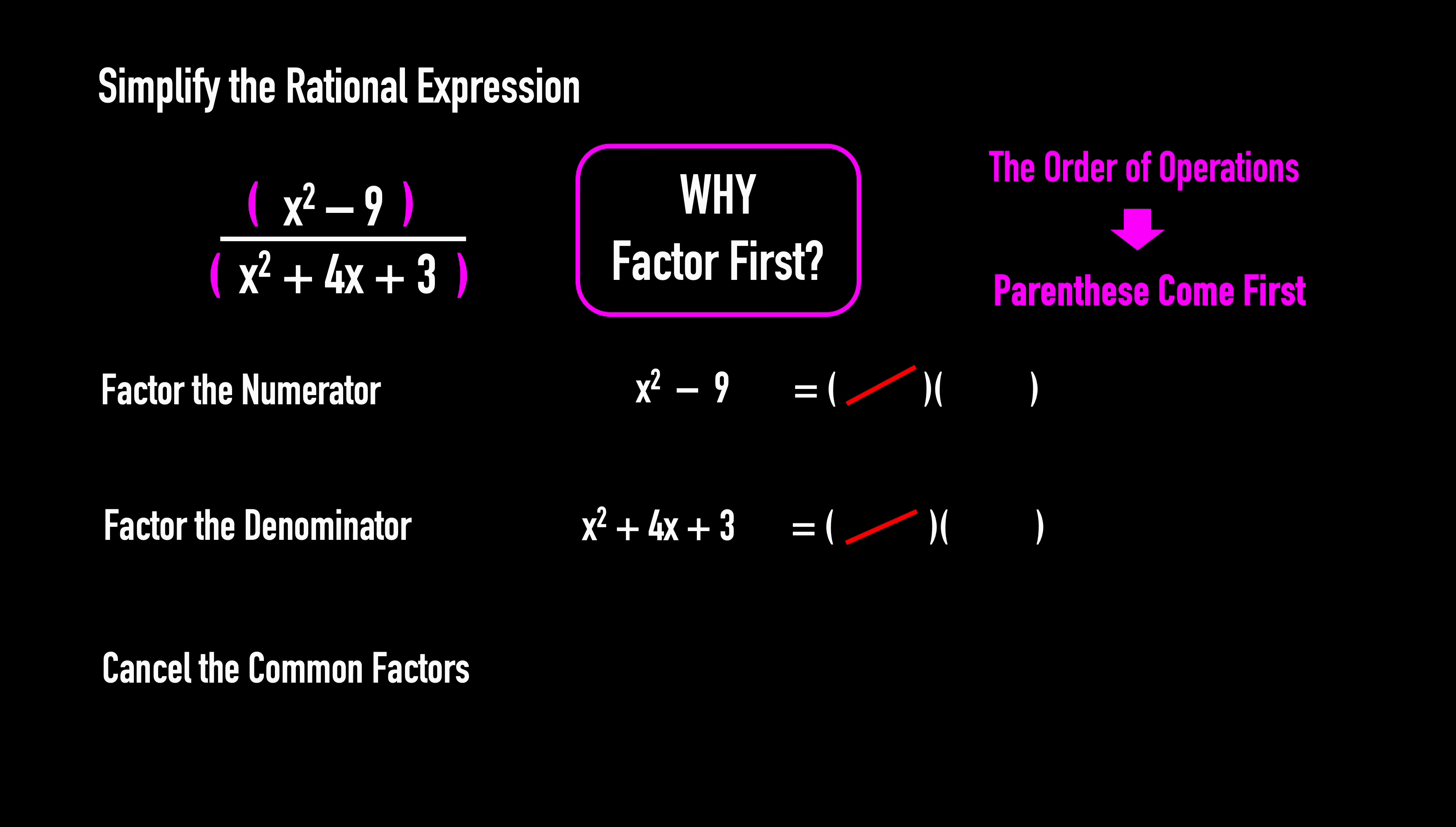Factor the numerator. This is a difference of squares, so it's x plus 3 times x minus 3.